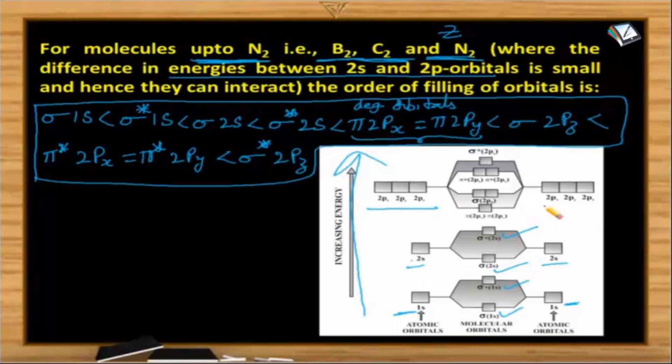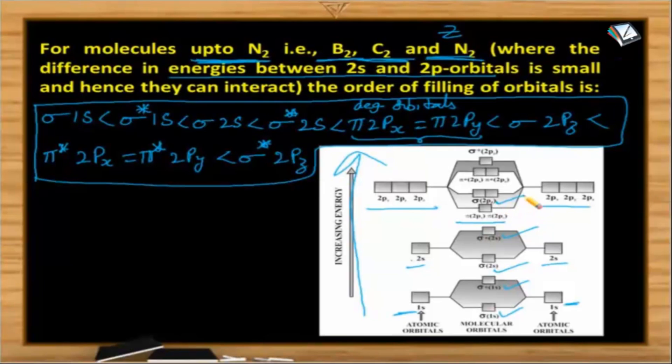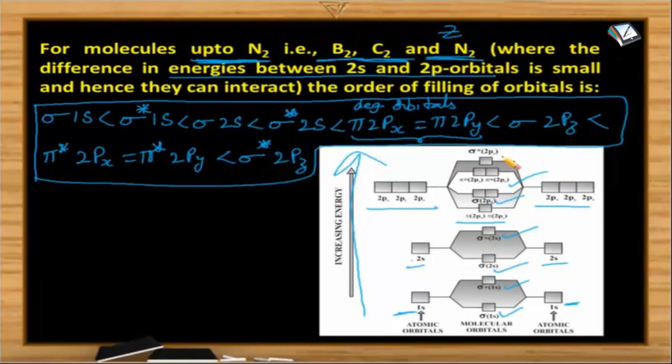When the 2p orbitals are involved, so first in this particular case the energy of pi 2px which is equal to pi 2py that is less than the sigma 2pz. And then comes the pi star 2px which is equal to pi star 2py and last it comes sigma star 2pz. That is the case for the molecules up to nitrogen.